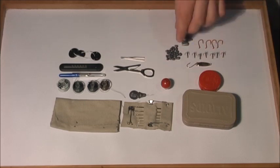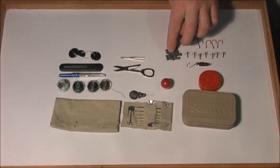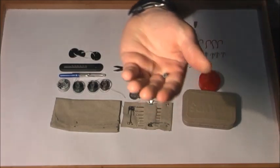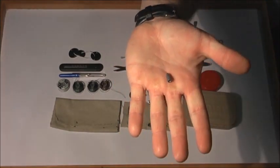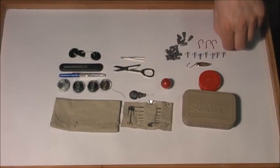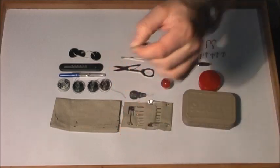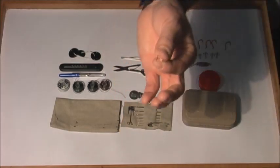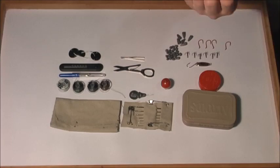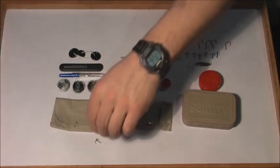Now I have BB split shot, about 24 of them. I also have bullet-type weights, which are really convenient - I have about six of those. Number six hooks, four of those.